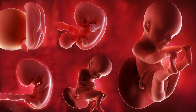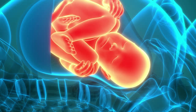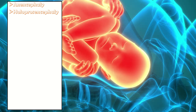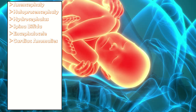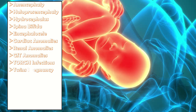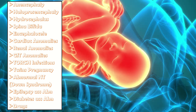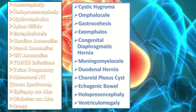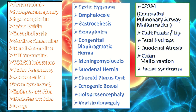Before ending this presentation, here is a list of other fetal anomalies: anencephaly, holoprosencephaly (also called holoпросencephali), hydrocephalus, spina bifida, encephalocele, cardiac anomalies, renal anomalies, GI anomalies, TORCH infections, twin pregnancy, abnormal nuchal translucency occurring in Down syndrome, epilepsy-associated abnormalities, diabetes-associated abnormalities, drugs causing different abnormalities, cystic hygroma, omphalocele, gastroschisis, exomphalos, congenital diaphragmatic hernia, meningomyelocele, duodenal atresia, choroid plexus cyst, echogenic bowel, holoprosencephaly, ventriculomegaly, congenital pulmonary airway malformation, cleft lip and palate, fetal hydrops, duodenal atresia, Gary malformation, and Potter's syndrome.